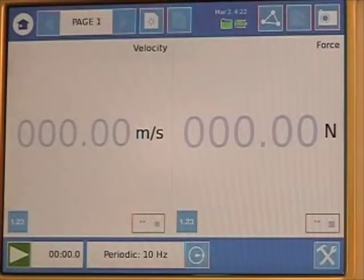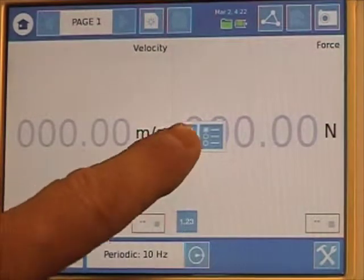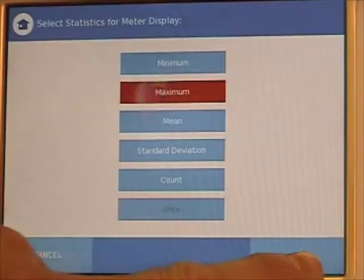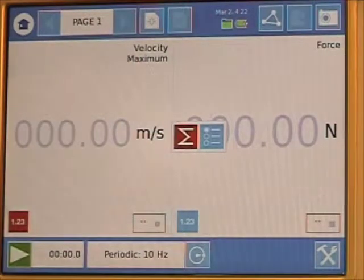We want to record maximum force and maximum velocity, so to do that we press the number icon, we then press the sigma, and we press maximum, and OK. Now we are recording maximum velocity.